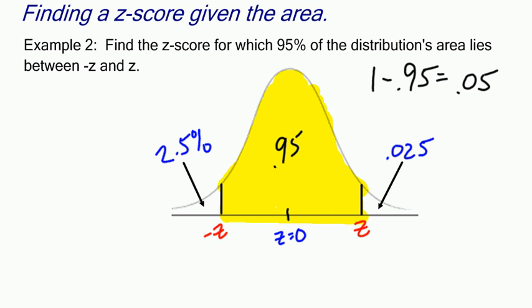Now I'm going to use my calculator to find the z-score that cuts off this bottom 2.5%. If I can find this z-score, which will be negative, I can find the positive one as well—it's just the opposite. Here we go.